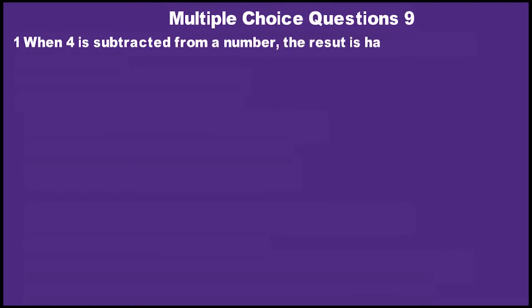Multiple choice question 9. Question number 1: When 4 is subtracted from a number, the result is half the number. Find the number. Option A: 8. Option B: 2. Option C: -2. Option D: 4.